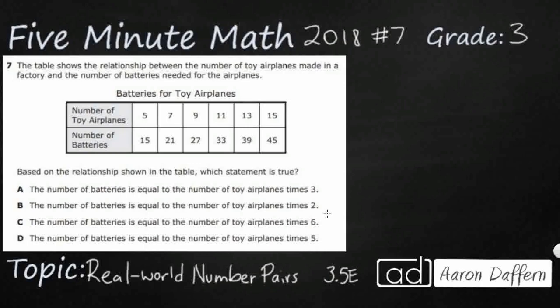Hello, and welcome to 5-Minute Math. Today we are looking at the third grade concept of real-world number pairs. This is standard 3.5e in the great state of Texas, and we are using item number 7 off the 2018 released STAAR test.